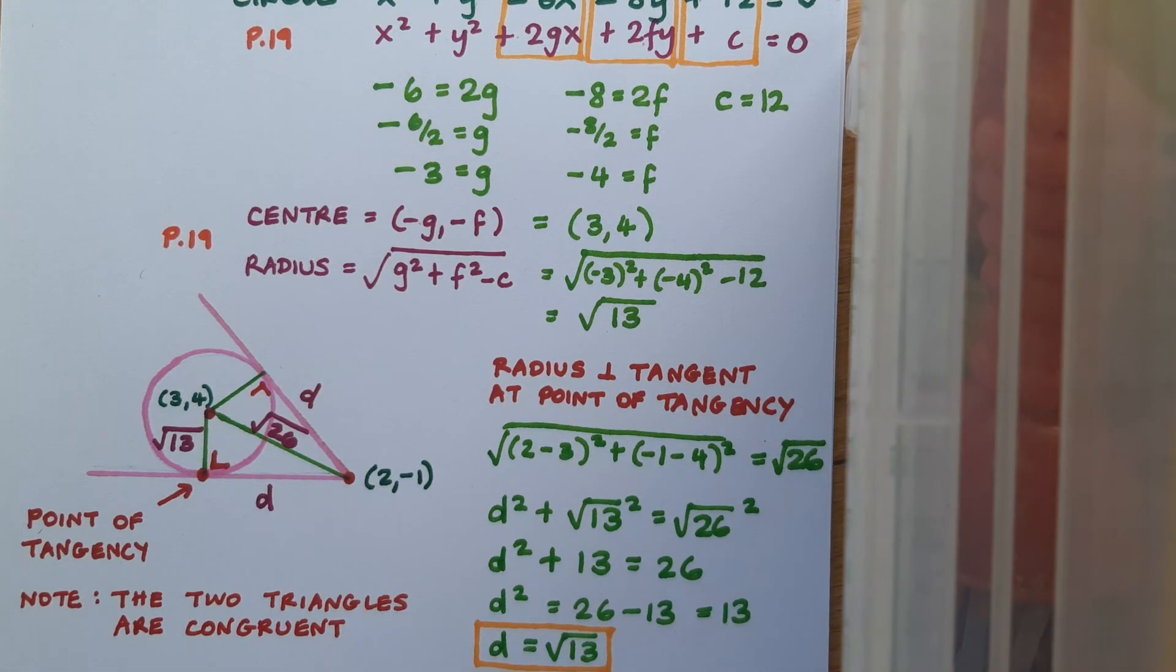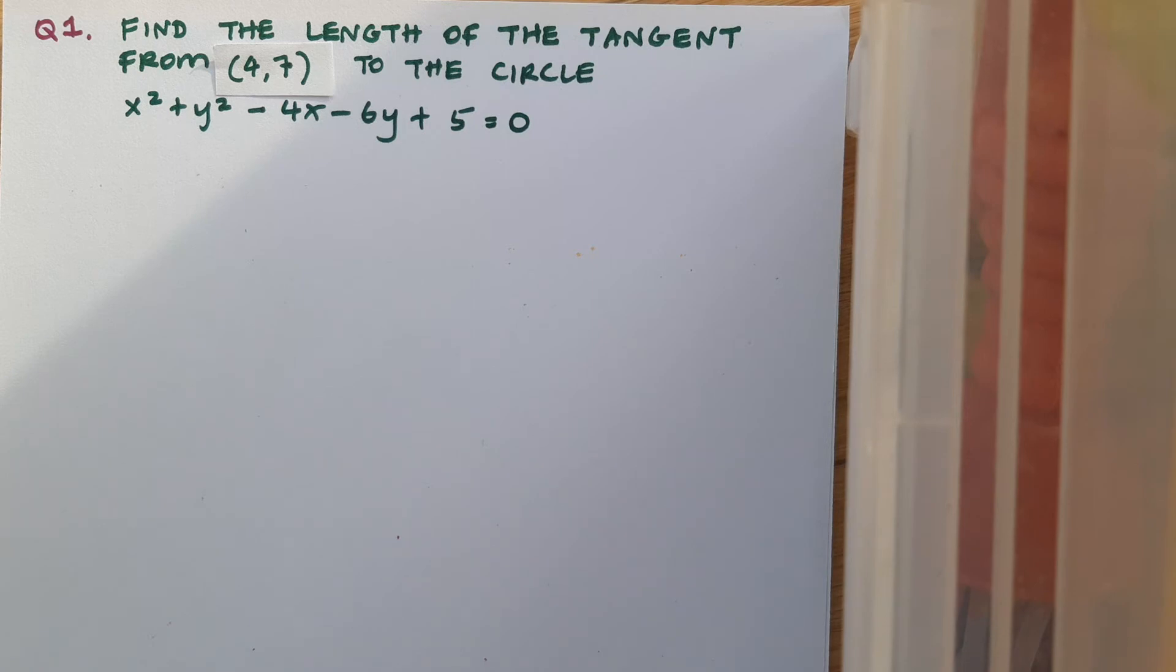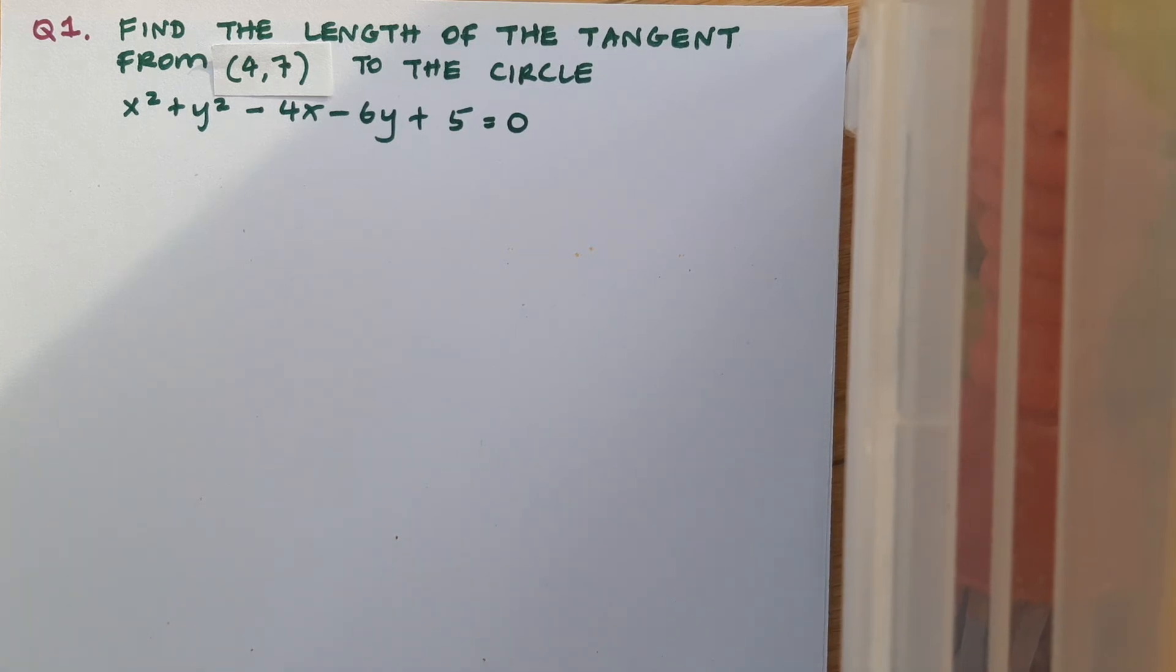Okay, so now a question for you to do yourself. Your question is find the length of the tangent from the point (4,7) to the circle x² + y² - 4x - 6y + 5 = 0. So pause the video here now, and when you're finished, play and check and see if you got it correct.